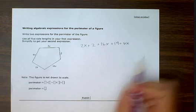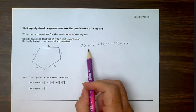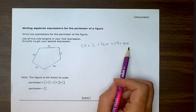So the five sides are added together to get the perimeter of the figure.